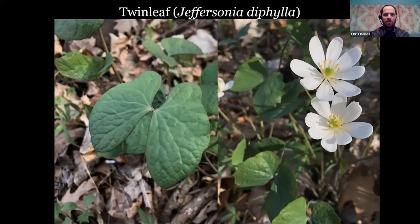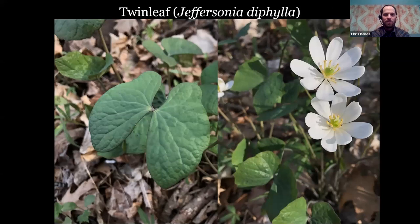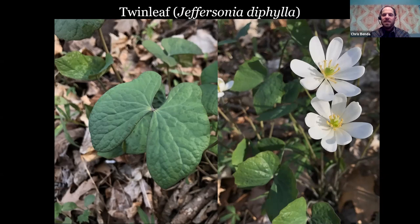Twinleaf is also a rare plant in Illinois. It has beautiful butterfly-wing-shaped leaves, and the flowers sort of resemble bloodroot, but it's also in the Berberidaceae — related to mayapple. An interesting thing about this plant is that it blooms really early and quickly, and even while blooming, if you look at it wrong, the petals will fall off because they're so delicate. This is one you have to seek out early and photograph typically in early May. And it's named after Thomas Jefferson — Jeffersonia, the twinleaf.